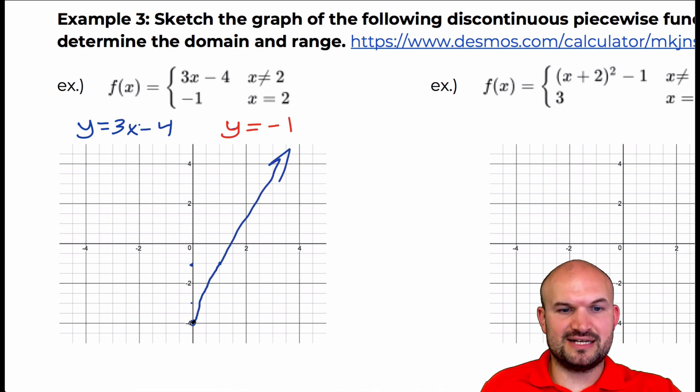Now that graph continues positively and negatively, right? But the issue here is it says x cannot equal 2. So I go, I look at 2 and I say alright, right there, there is a hole actually. There's actually not a graph, there's not a point on the graph, there's that hole.